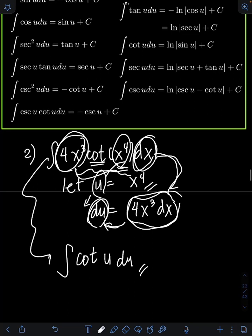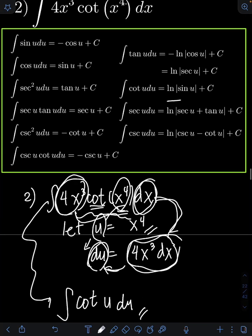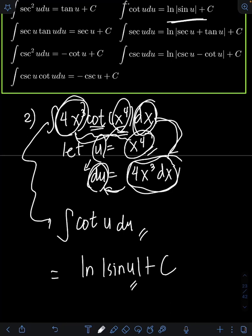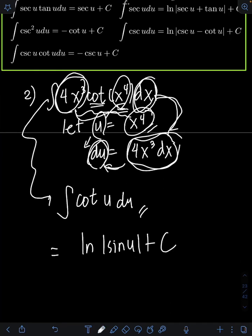Looking at the formula, the integral of cotangent u du equals ln of absolute value of sin u plus C. So therefore we have ln of sin u plus C. Transforming back u in terms of x, since u equals x to the 4th, the final answer is ln of sin of x to the 4th plus C.